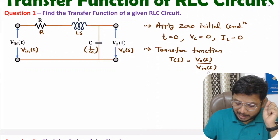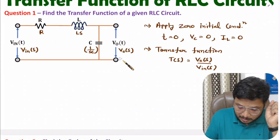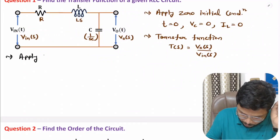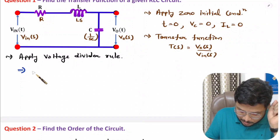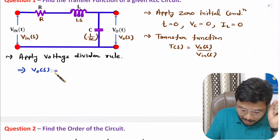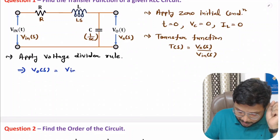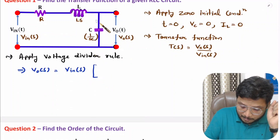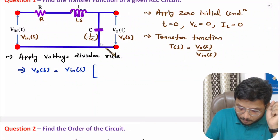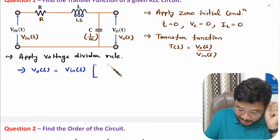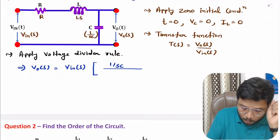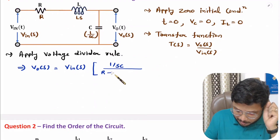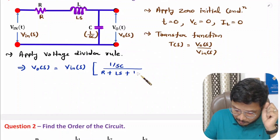Now I will explain calculation of the transfer function. To identify the transfer function, I will apply the voltage divider rule. Applying the voltage divider rule, the output voltage Vo(S) equals the input voltage Vin(S) multiplied by the impedance of the element across which we are measuring voltage — that is the impedance of capacitance, 1/SC — divided by the total impedance, which is R plus the impedance of the inductor LS, plus the impedance of the capacitor 1/SC.